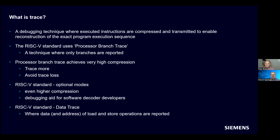The actual name of this RISC-V standard is known as Efficient Trace for RISC-V. That efficiency really means two things: you can trace more — such as multiple cores simultaneously — or you can trace more data by looking back further in time. It also allows you to avoid trace loss, where peaks in trace bandwidth may be higher than the SOC's interface can transmit off chip, causing you to lose trace. The standard also has optional modes that can increase compression even further, and it includes an optional data trace that can capture both the data and addresses of load and store operations.